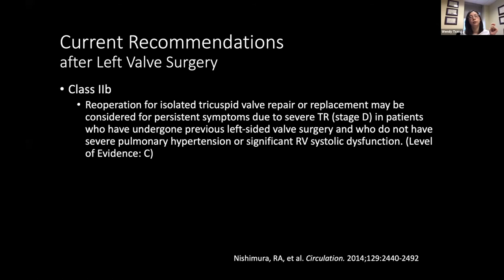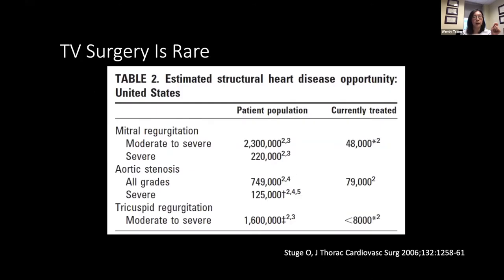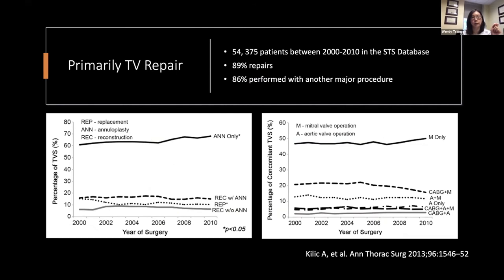Back to the guidelines: for patients who have TR after left heart surgery, it's a class 2B indication — not a very strong recommendation. Part of the reason is the requirement that patients not have severe pulmonary hypertension or RV systolic dysfunction. Isolated tricuspid regurgitation surgery is rare — numbers of mitral and aortic surgeries are much higher compared to tricuspid surgery. Most tricuspid surgery is actually repair, and in the context of mitral valve operations, it's rarely performed in isolation.